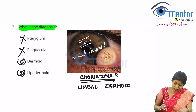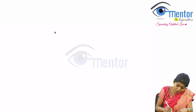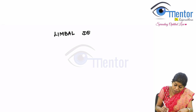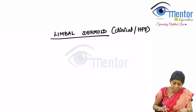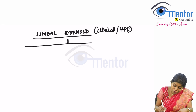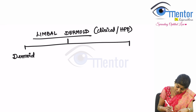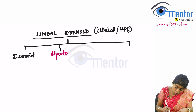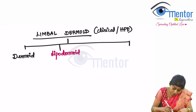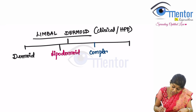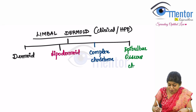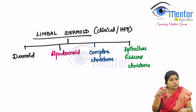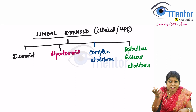Now how do we know whether it is dermoid or lipodermoid? Based on its clinical appearance and histopathology — once you excise the limbal dermoid and send it for histopathology — there are four types: dermoid, lipodermoid, complex choristoma, and epibulbar osseous choristoma. This last one is self-explanatory: there are bony and cartilaginous components.